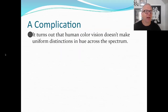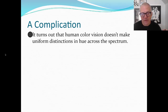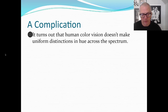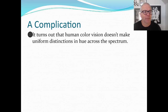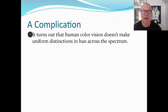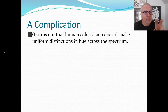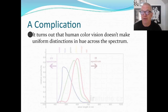A slight complication before giving the argument: it turns out that human color vision doesn't make uniform distinctions in hue across the full spectrum. It's not as if for the full range from 400 to 800 nanometers you're equally capable of making the same gradations across the range. The reason is that you've got three different kinds of receptors in your retina: blue, green, and red receptors, each tuned to activate at different frequencies.